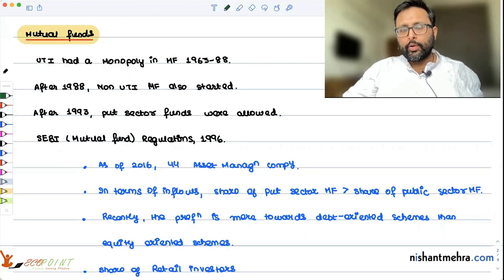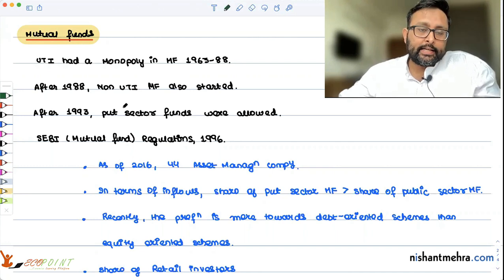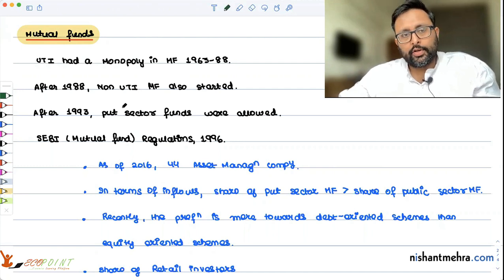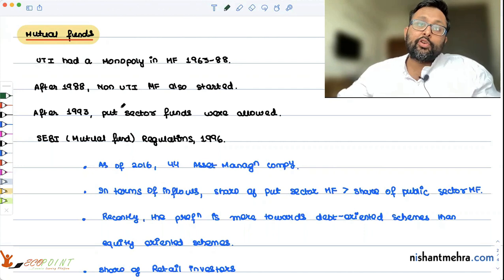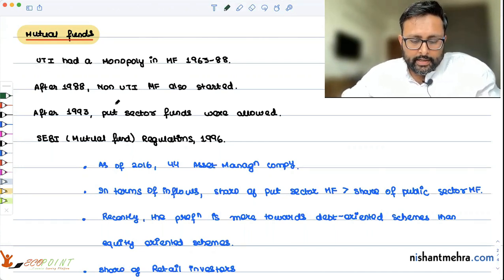From 1963 to 1988, UTI almost had a monopoly in the mutual fund market. After 1988, some non-UTI mutual funds also started, mainly the public sector banks, LIC, general insurance companies. After 1993, private sector started coming in the mutual funds. This was the turning point when mutual fund regulation act was passed in 1996, it gave more operational freedom to the mutual funds.